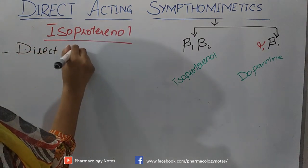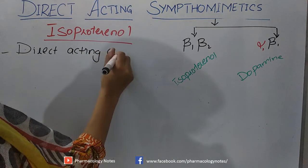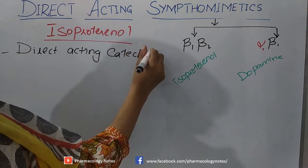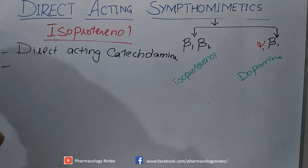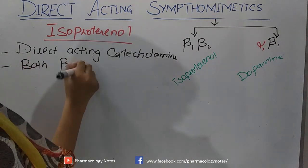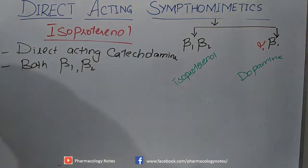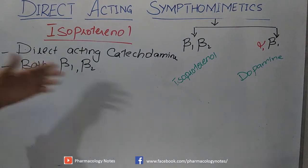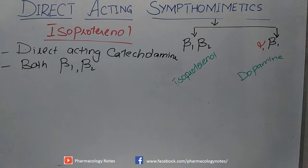Isoproterenol is a direct-acting catecholamine. It predominantly stimulates both Beta-1 and Beta-2 receptors and is non-selective. Isoproterenol is not commonly used clinically because of its non-selective action on both Beta-1 and Beta-2 receptors.